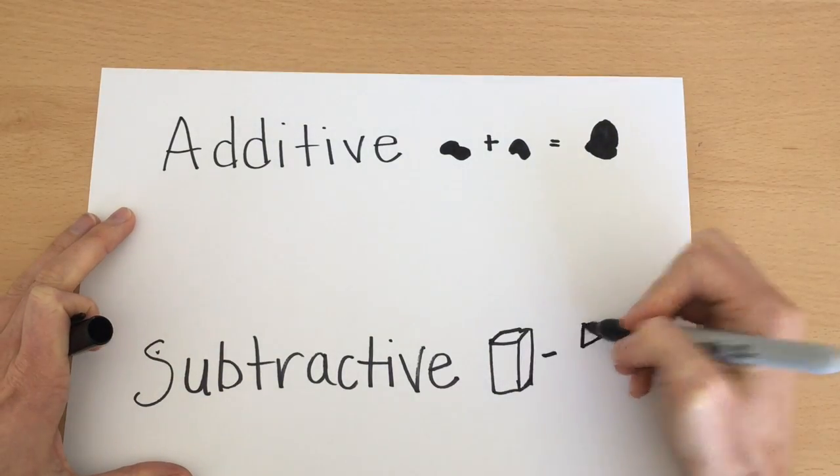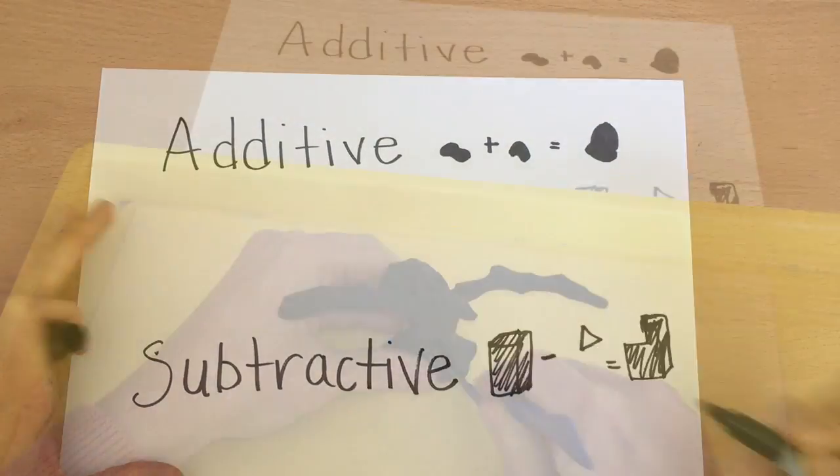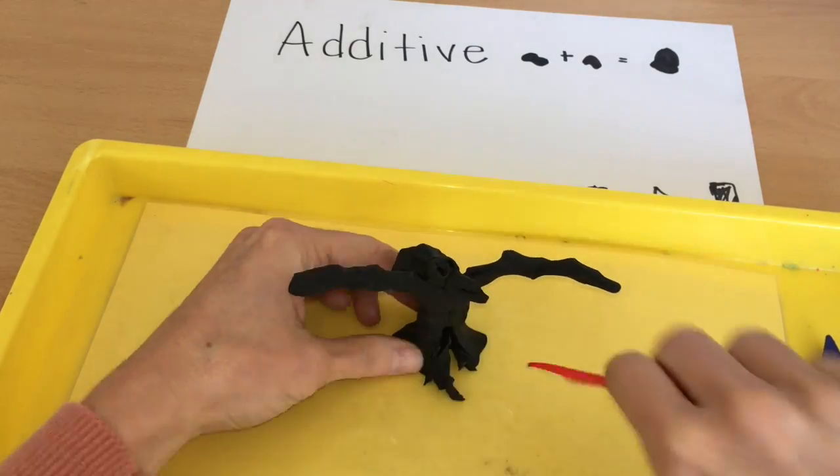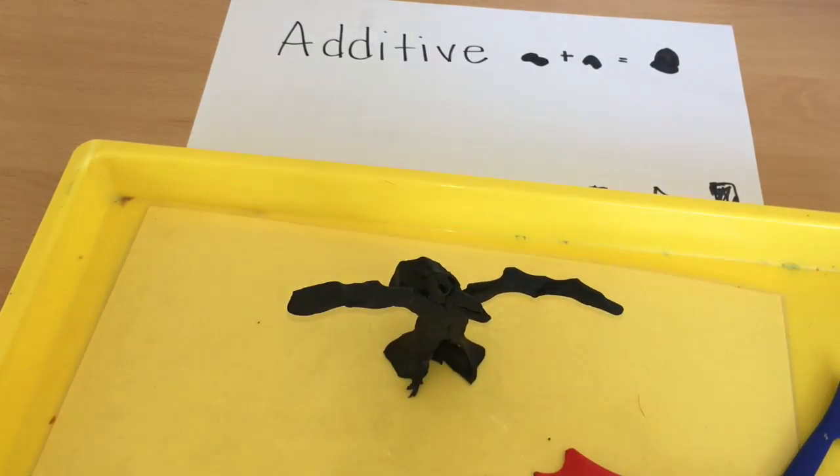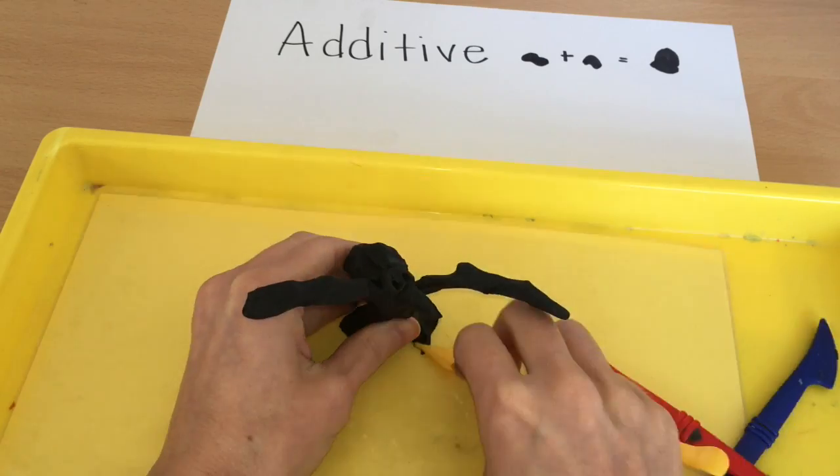Subtractive process. Cut away parts of your sculpture to get the desired shape that you want.